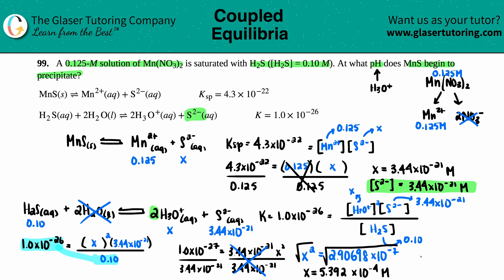Well, what was X? We said that H₃O⁺ was X. So I know that my H₃O⁺ concentration is at X value, 5.392 times 10 to the negative fourth molarity. But now let's see, are we done? No. But we're getting close because they said at what pH? Remember, H₃O⁺ goes to pH. What's the formula?